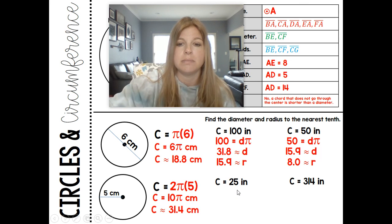Next one. My circumference is 25, so 25 is equal to the diameter times pi. Divide both sides by pi, I would get 8.0, and then my radius would be 4.0.